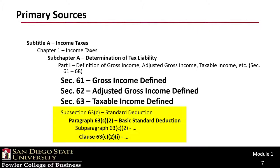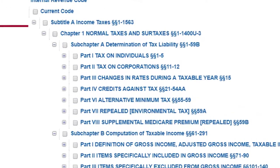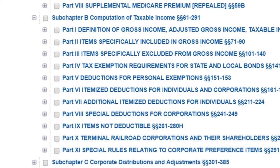If a code section is 15 pages long, it really doesn't help the reader to only cite the code section. You would be forcing the reader to review all 15 pages to find the relevant piece of tax law. This would definitely be a situation where referring to a lower strata — such as a subsection, paragraph, subparagraph, or clause in the code — would make a lot of sense. The Internal Revenue Code is set up in a reasonably meaningful way, with subchapters and parts that break down the code into meaningful chunks.